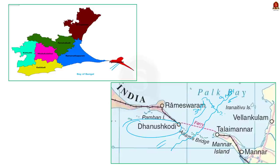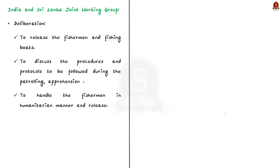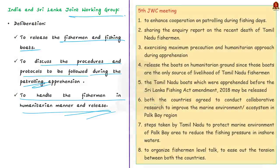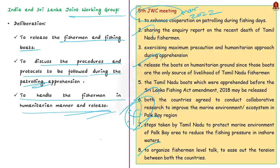To deal with issues and genuine problems of Indian fishermen, many efforts have been taken. Main effort is the India-Sri Lanka joint working group. Joint working group meetings discuss release of fishermen and fishing boats, procedures and protocols during patrolling, and how to handle fishermen in humanitarian manner. The latest fifth meeting was held in March 2022. These salient points addressed will be helpful in Mains answer writing.